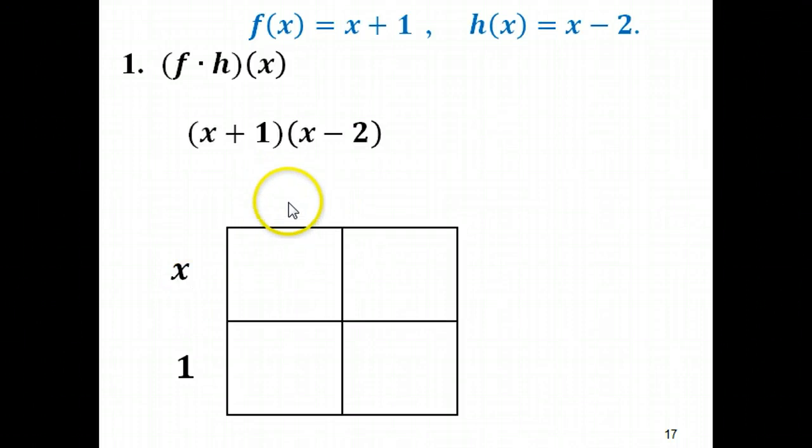Now up top here, the first one that I'm going to need to write is whatever this first term is here. In this case, it would be an x. And the second term would be a negative two. So I'm going to write those now. There's my x and my negative two.